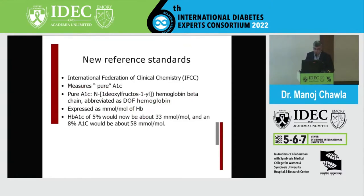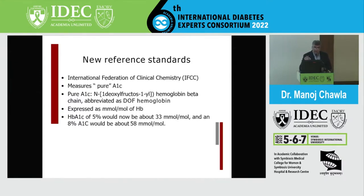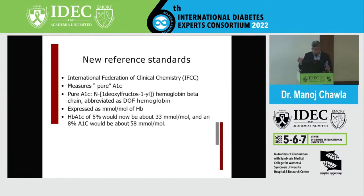There are now new reference methods. The IFCC method — considered the pure A1C value — expresses HbA1C in millimoles per mole of hemoglobin. An HbA1C of 5% equals approximately 33 mmol/mol, and 8% is close to 58 mmol/mol. While this is used as a reference in parts of the world, many clinicians still find the percentage format more intuitive.